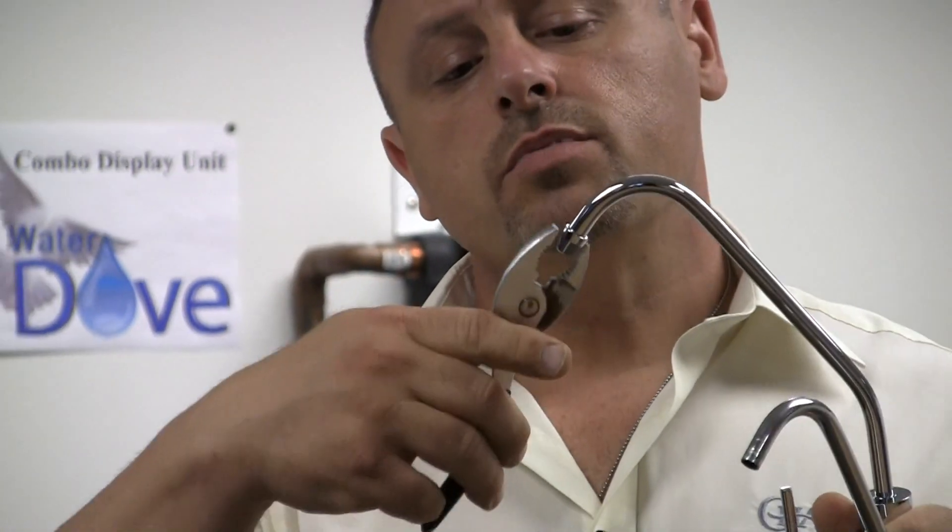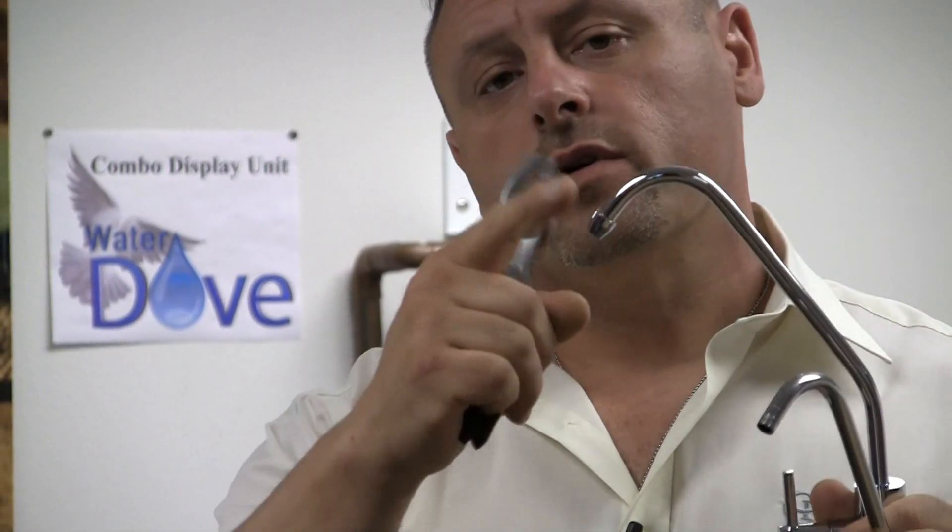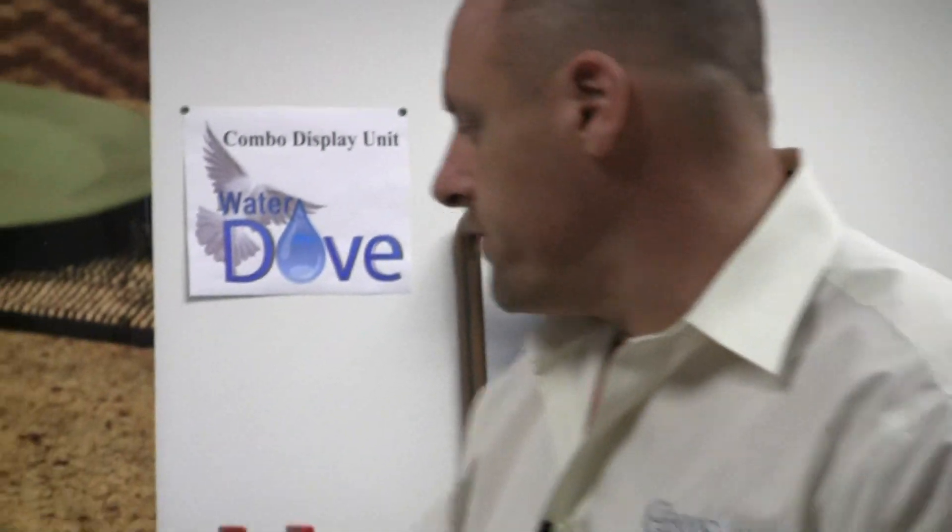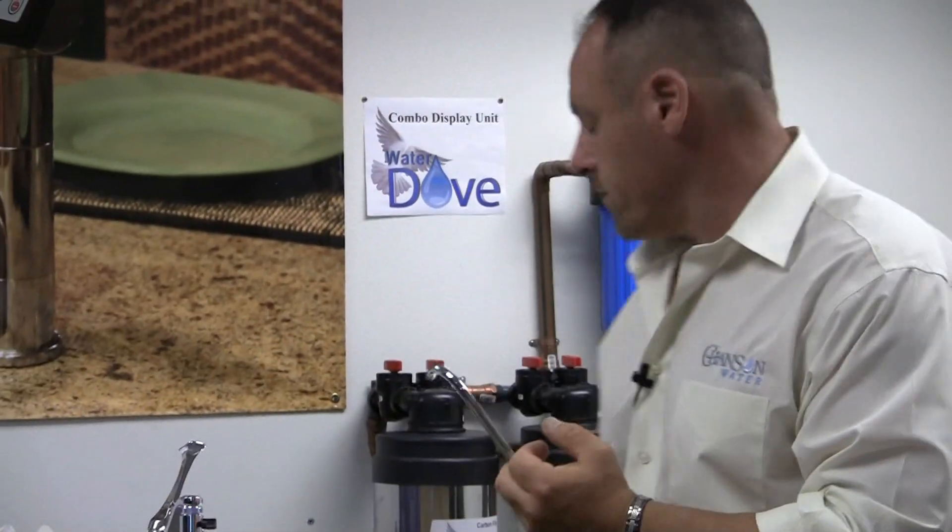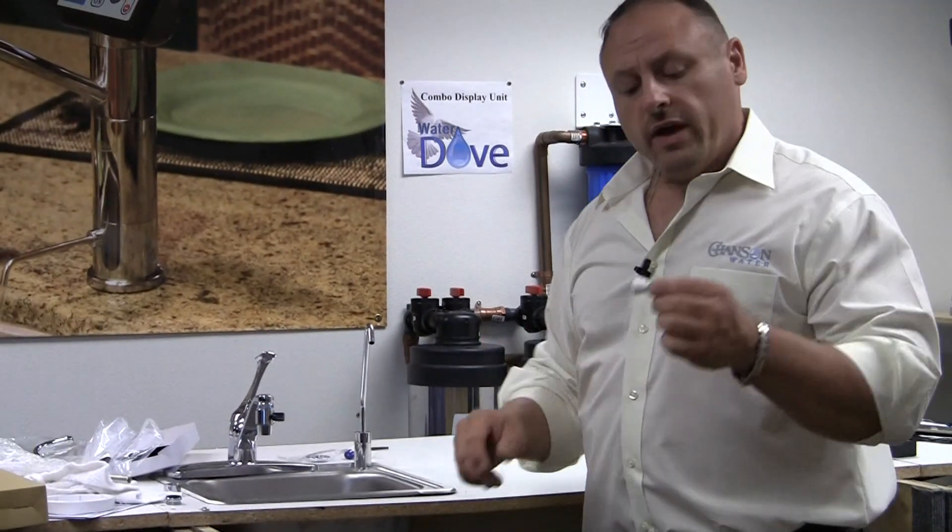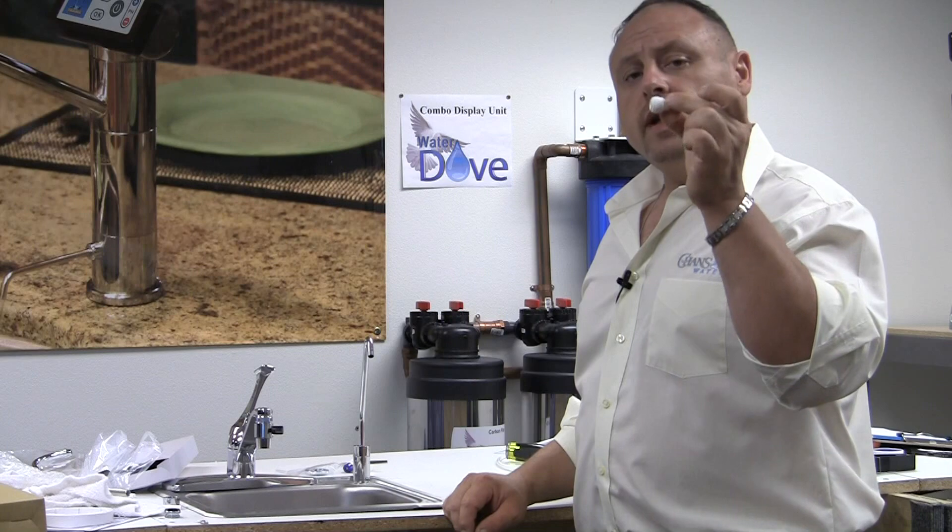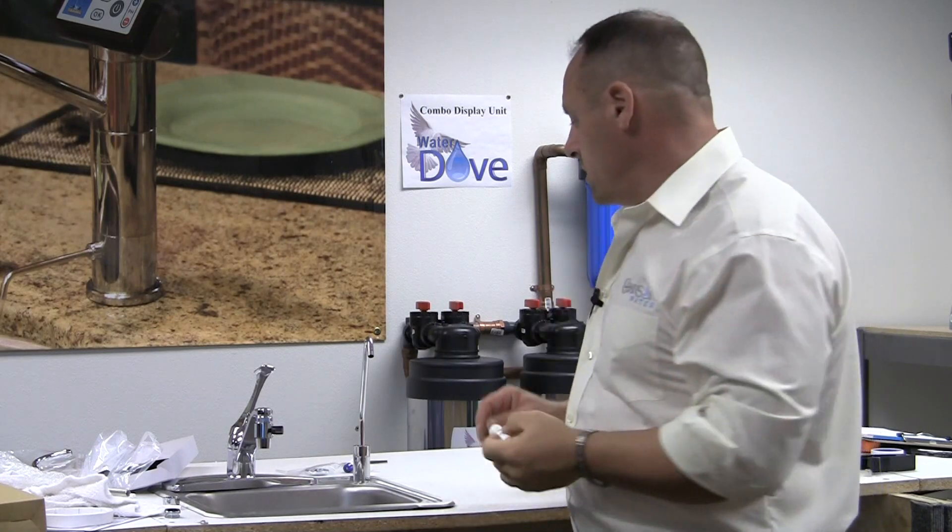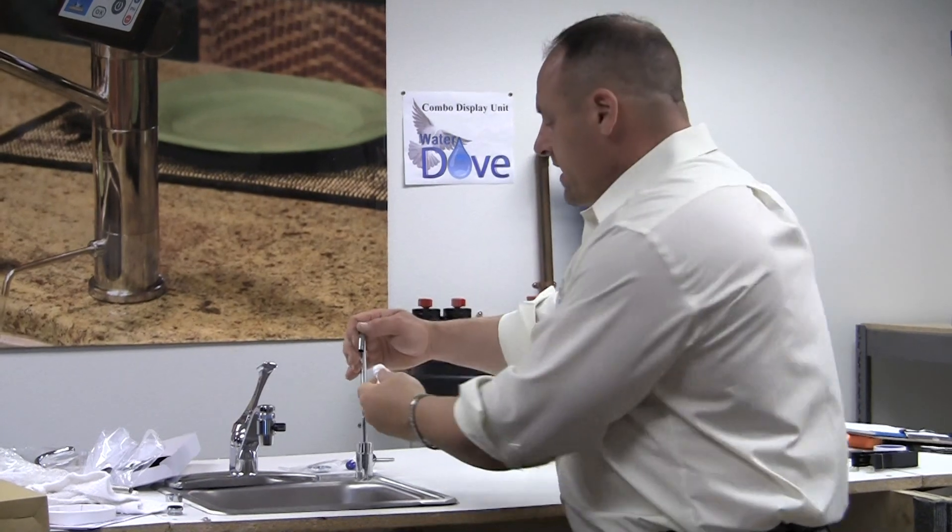So we just took a pliers and twisted back and forth until that tip came off. And we have these wonderful quick connect fittings - this is a 3/8 by quarter inch connection union and you'll simply take it and slip it over the tip until it bottoms out.